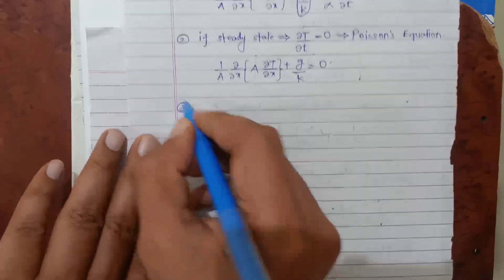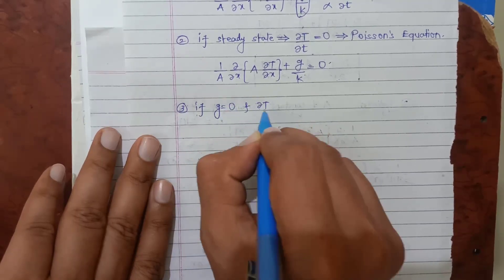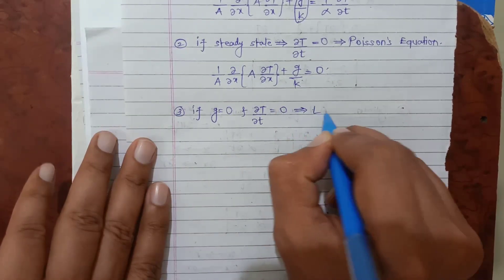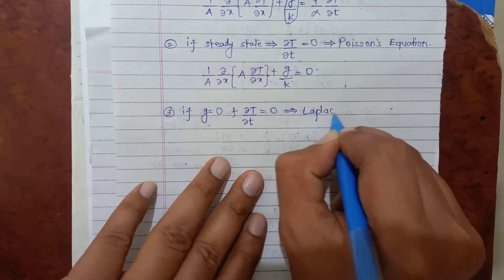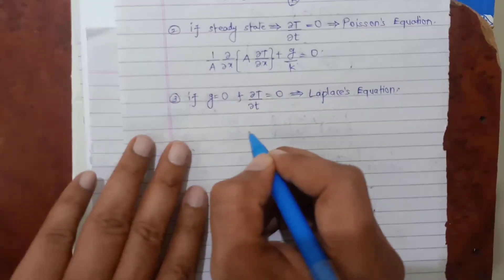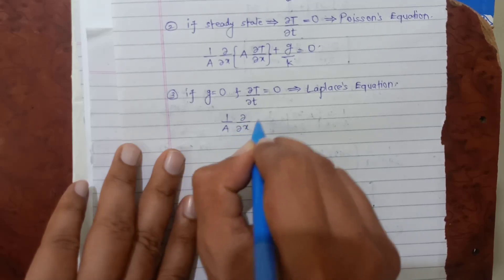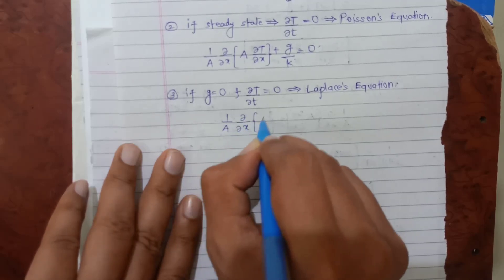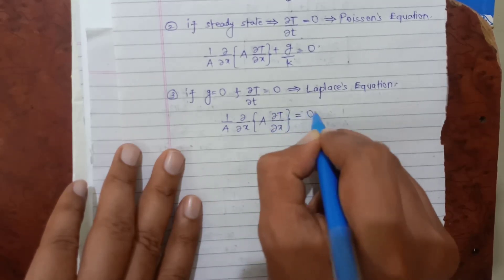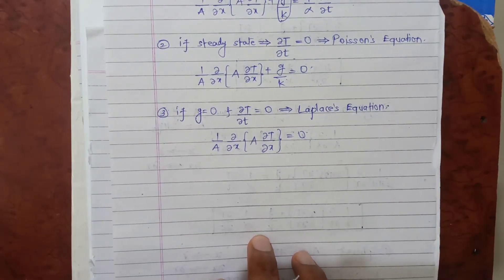The third possibility: if both the heat generation rate is zero and it is a steady state — so ∂T/∂t = 0 — then the equation is known as Laplace's equation: 1/A · ∂/∂x(A · ∂T/∂x) = 0. These were the special cases of the governing differential equation in one dimension. Thank you.